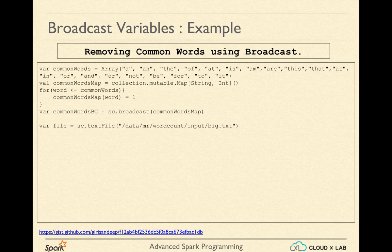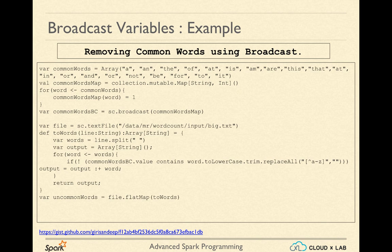Next, we create an RDD using a file located in HDFS. Here each record will be a string, because a text input format which is being used by default returns the record of string data type. Afterwards, we define a function with the name toWords which breaks down a line into an array of words that are not in the common words map accessed via the broadcast variable. Then we call this function using flatMap, resulting in an RDD of uncommon words.